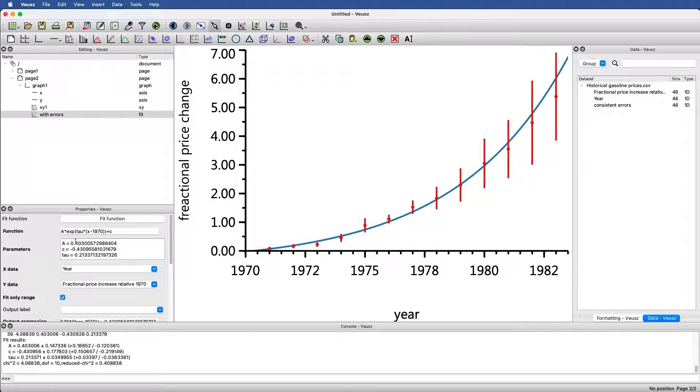If you don't have the console view, you need to go to view, windows, and then console. There it gives us the results of the fit. Here is the parameter that we arrived at for a, c, and tau. Those are also given here, but what is also given is the error in those parameters for each of them that comes from the fit. That's what we'd like to show.